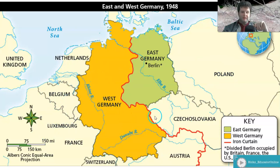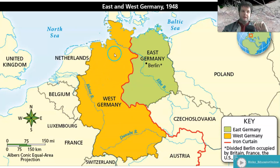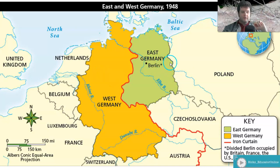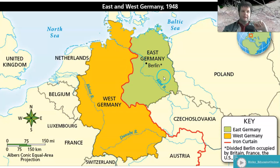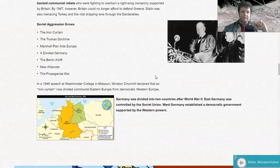Germany was split in two. Originally it was split into four pieces, but over time the three pieces under the French, the Americans, and the British condensed into West Germany, while the Soviet-controlled half became East Germany, with Berlin itself divided much like the nation of Germany.